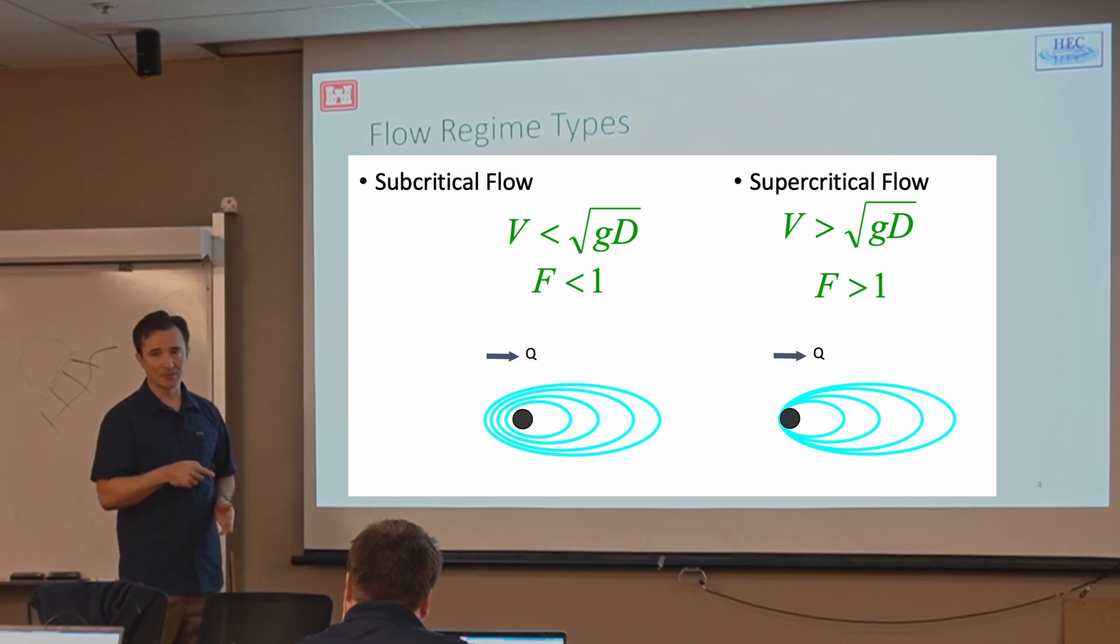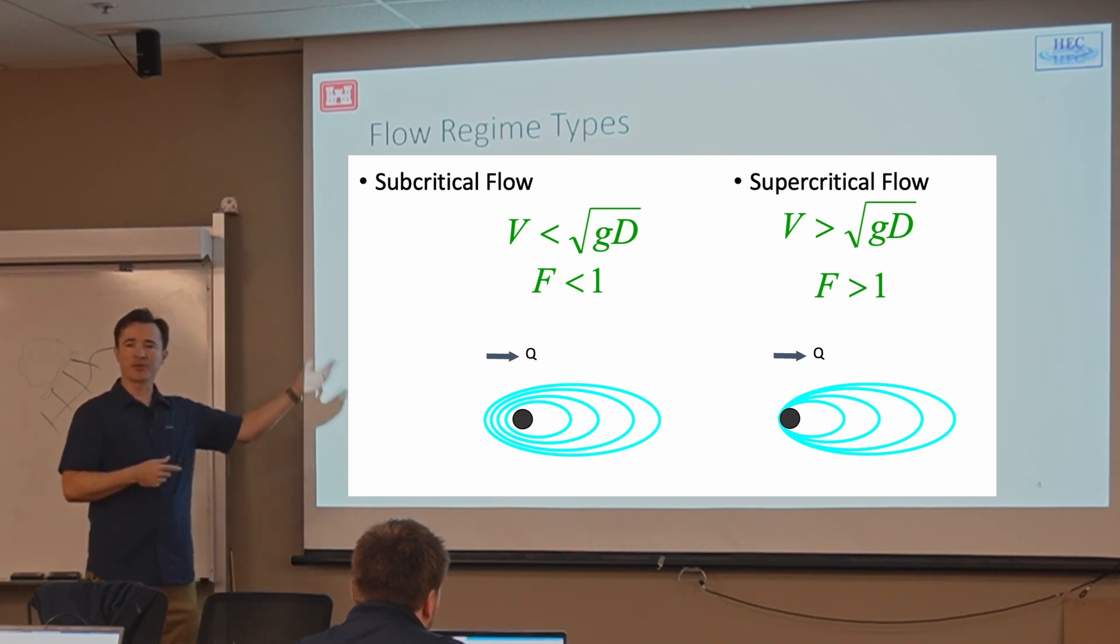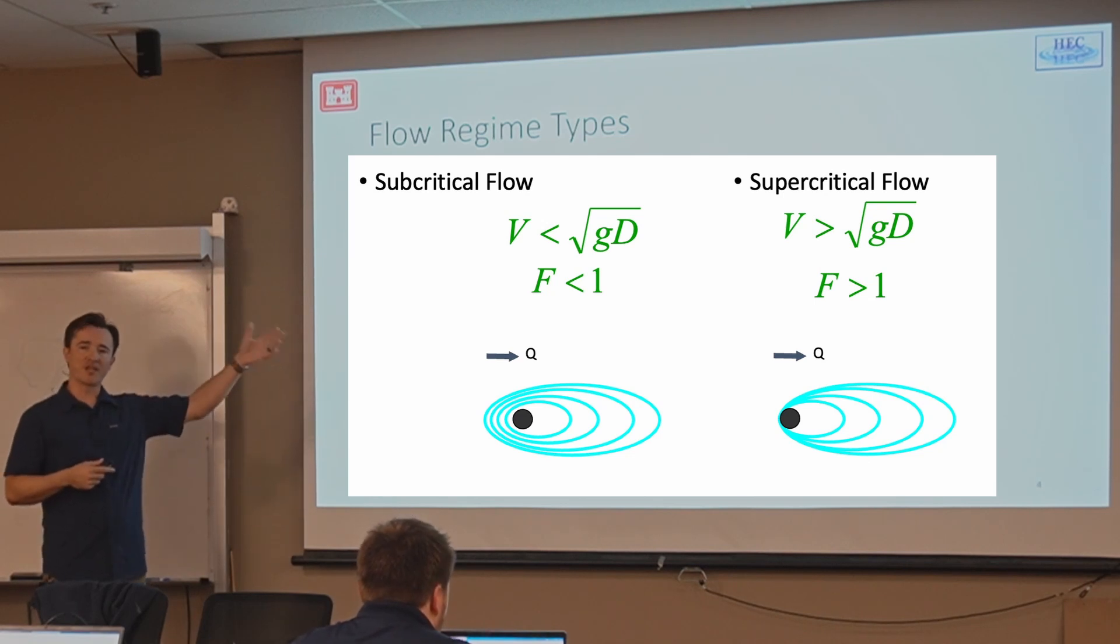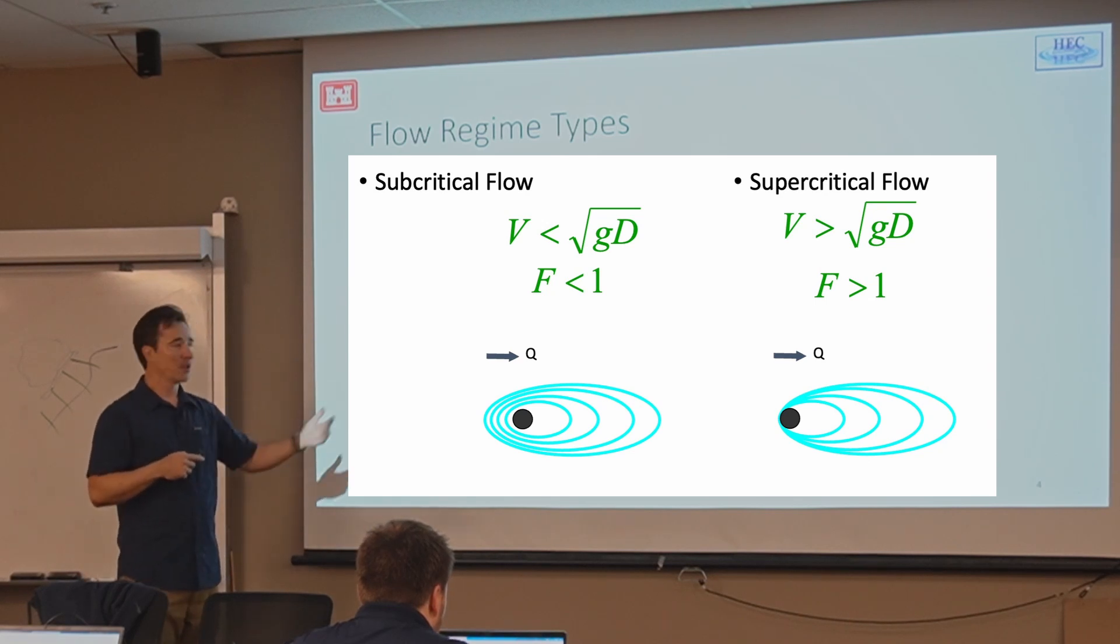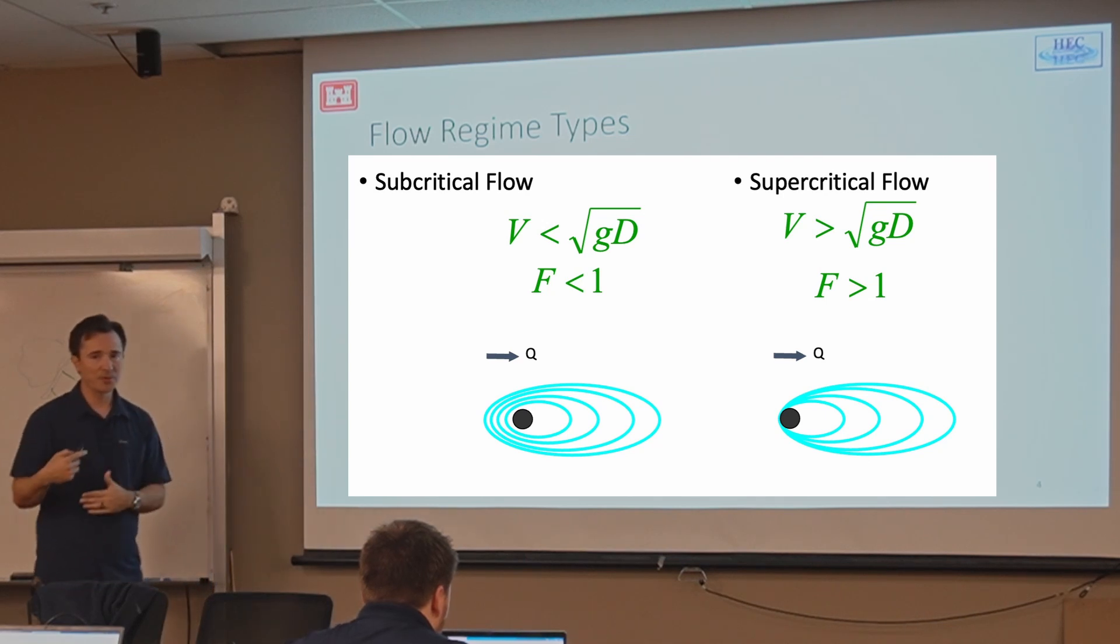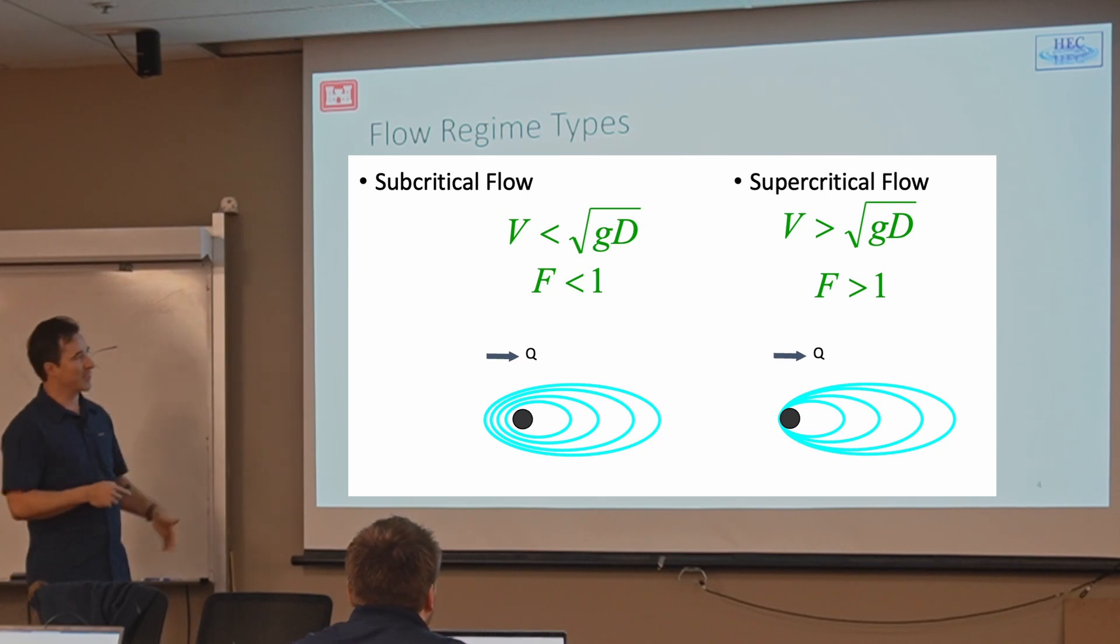So that's when you have supercritical flow. That's telling you that the wave information can't move upstream because the current is so strong. This is why when we do a supercritical solution, we solve from upstream. Because the dominant form of the energy is the current, and that's coming from upstream. Whereas when we solve subcritical flow, the more important thing is the water surface and how that impacts the upstream solution.